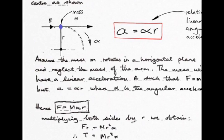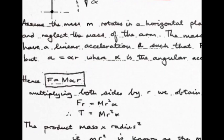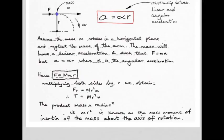The tangential force required to accelerate the blue object in its circular path is its mass multiplied by the desired angular acceleration multiplied by the radius. Multiplying both sides of the equation by radius, we get mass times radius squared — which is present in the right-hand part — and this is known as the mass moment of inertia of the mass about the axis of rotation. It is mass times radius squared.